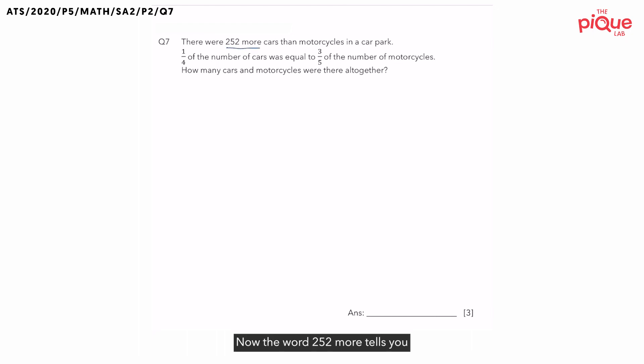What exactly are we comparing? Now, the word 252 more tells you that we are comparing between two items here. What are the two items here? They are, firstly, our cars, and secondly, our motorcycles. So the phrase 252 more cars than motorcycles tells you that there was a difference. And what is the difference?